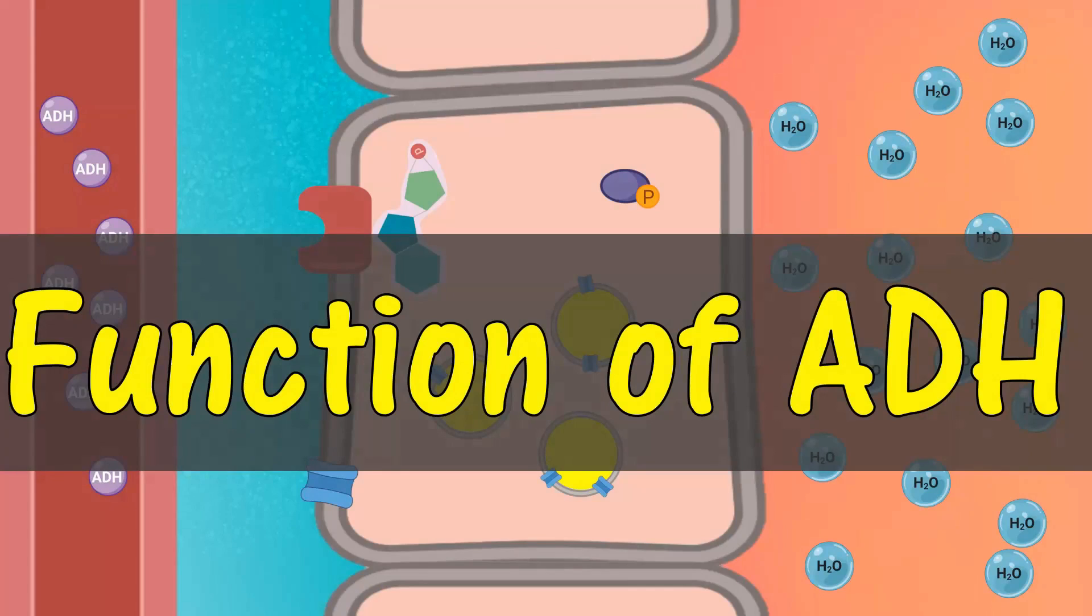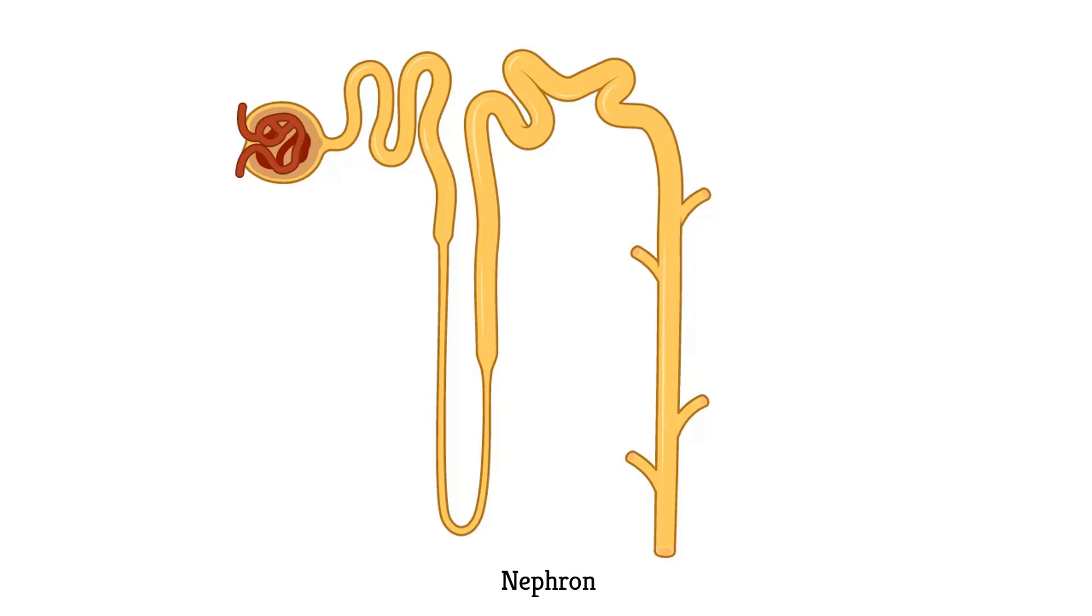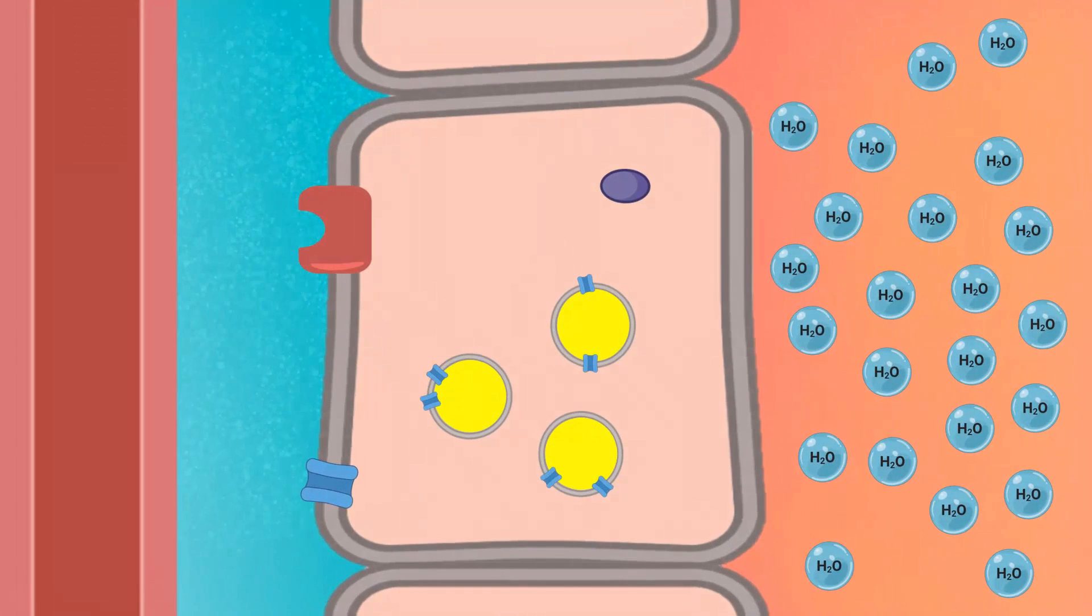The most important renal action of anti-diuretic hormone (ADH) is to increase the water permeability of the collecting duct epithelia of the nephron, thus controlling the degree of dilution or concentration of the urine.